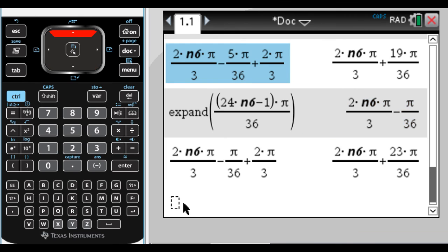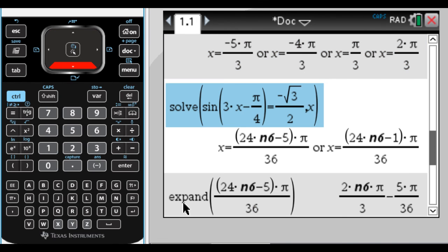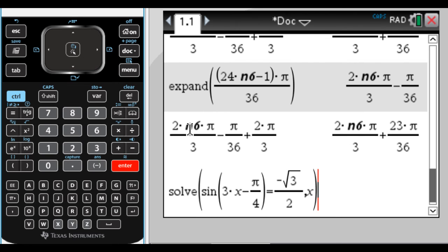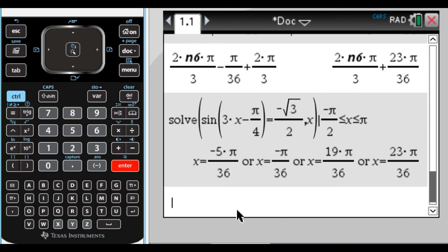And then also we could just solve this in general. So I'm going to go back up and get this and paste it down. And I'm going to specify the domain. So I'm going to do such that. So that's control equals. And 1 to the left takes you there right away. And then I'm going to do negative pi over 2 less than or equal to. So if you're typing on a computer, you can actually just type a less than and then an equal to. And the calculator will interpret that as less than or equal to when you hit enter. And then x and then less than or equal to pi. And if I hit enter, you can see that there are four solutions on that interval.